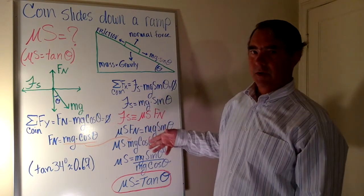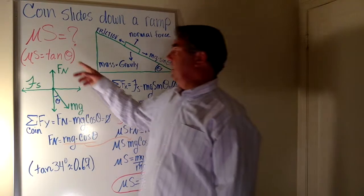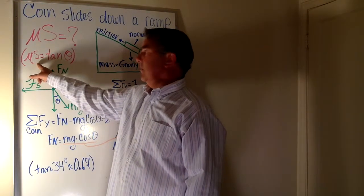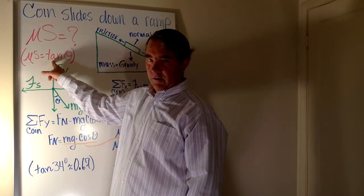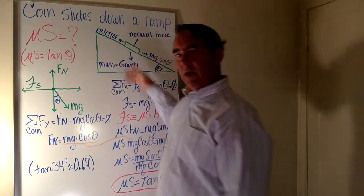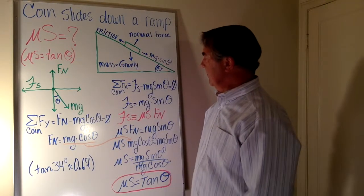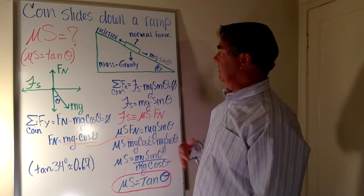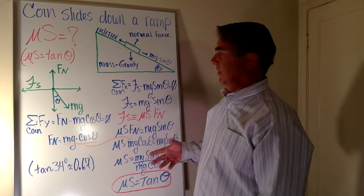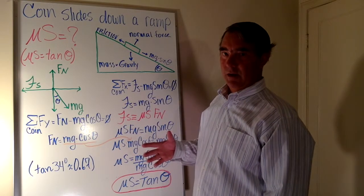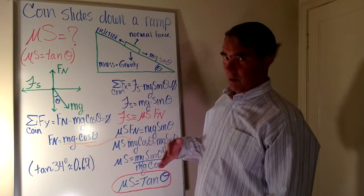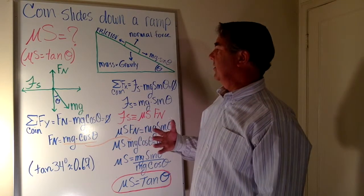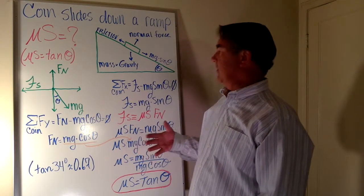That is the process by which the coefficient of static friction is determined and shown to be equal to the tangent of the angle that the ramp is tilted at. This is a common question in first semester mechanical physics — you'll see it on lab assignments, homework, quizzes, and tests, which is why I made this video. I hope you find it helpful.